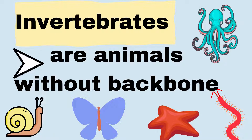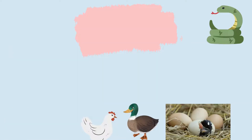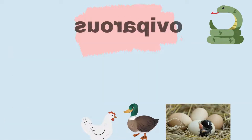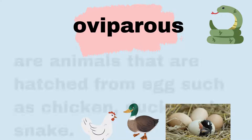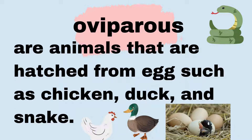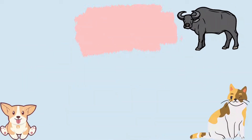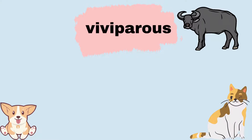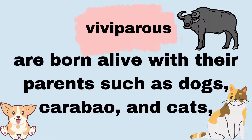Animals in the environment can also be oviparous — these are animals that are hatched from eggs, such as chicken, duck, and snake. Others can be viviparous — these are animals that are born alive, such as dogs, carabao, and cats.